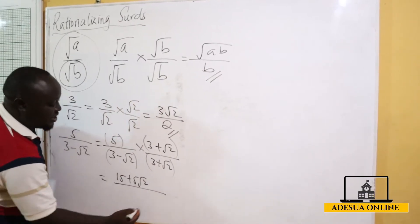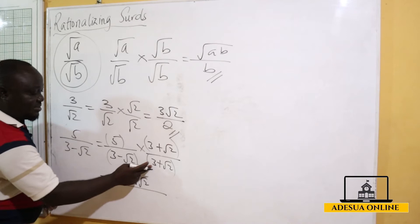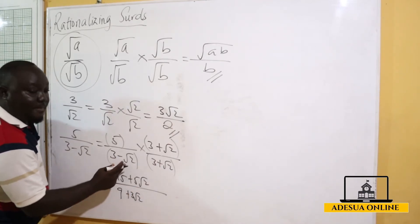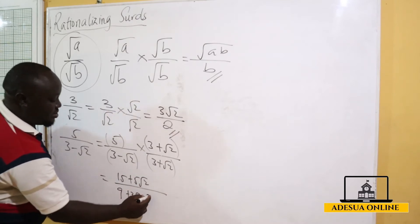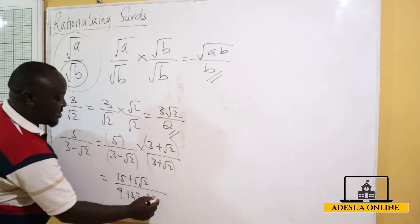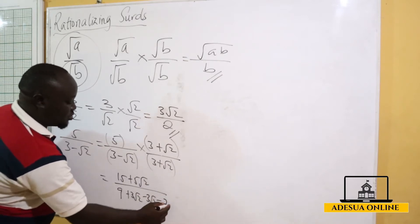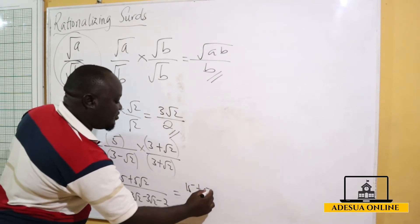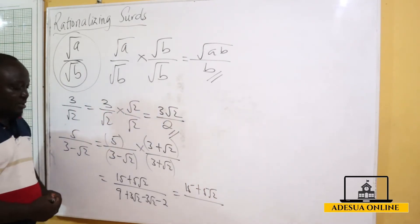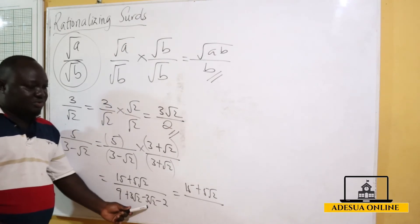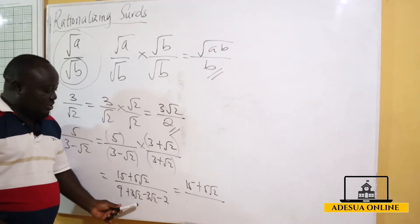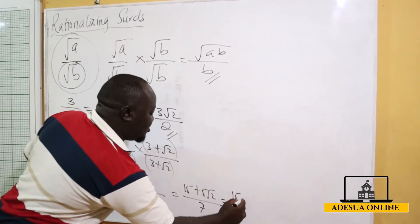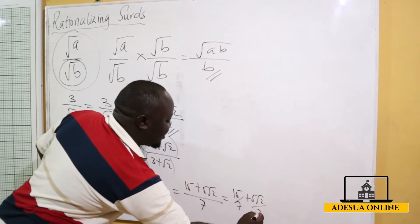In the denominator: 3 times 3 is 9, 3 times root 2 gives positive 3 root 2, minus root 2 times 3 gives minus 3 root 2, and negative times positive root 2 times root 2 is negative 2. Simplifying, 3 root 2 minus 3 root 2 equals zero, so we get 9 minus 2 which is 7. The final answer is 15 over 7 plus 5 root 2 over 7.